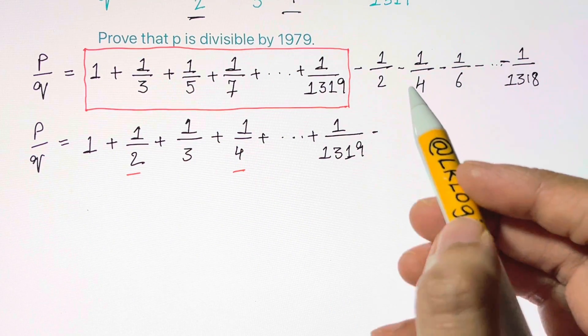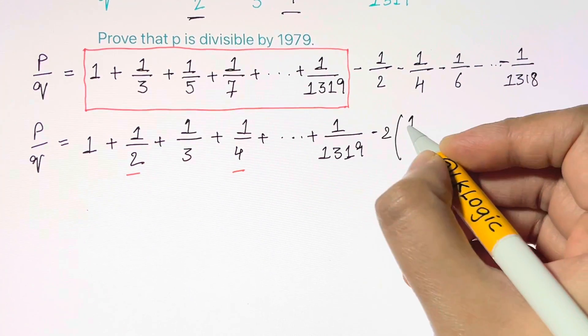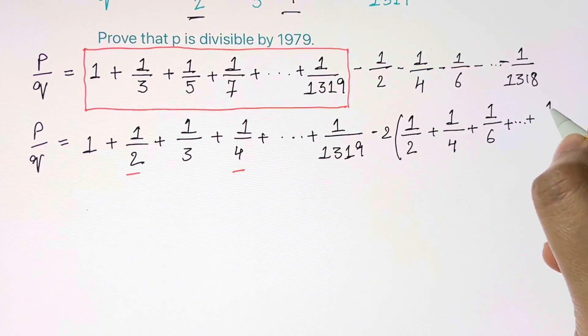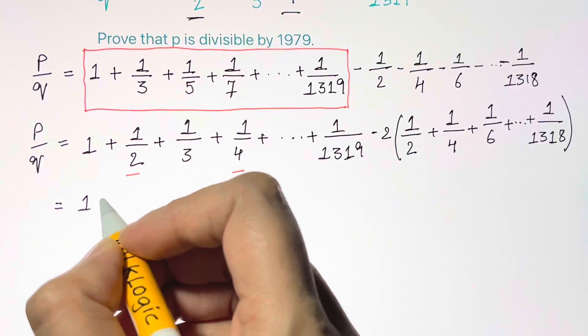Now to balance the whole expression we need to subtract that back, so we minus the double of these even terms. Coincidentally this factor of 2 will cancel out all the even denominators.